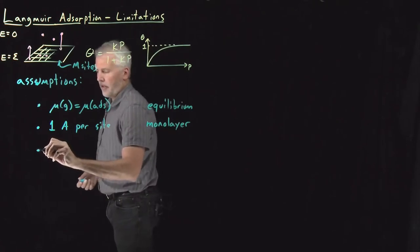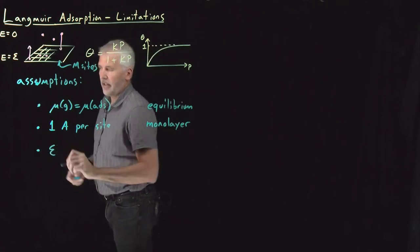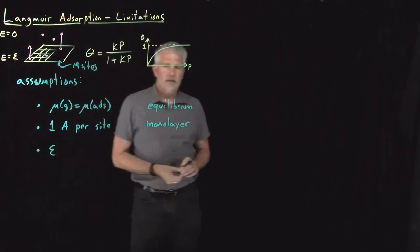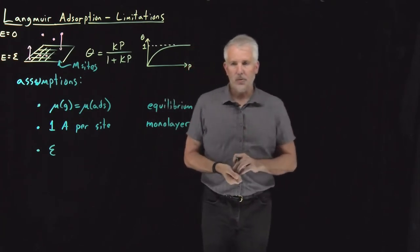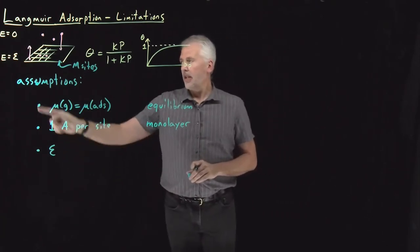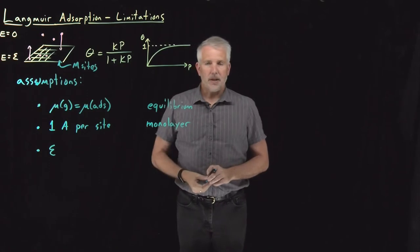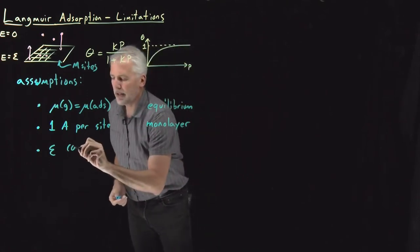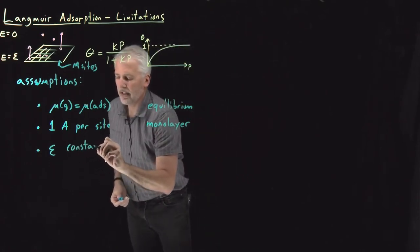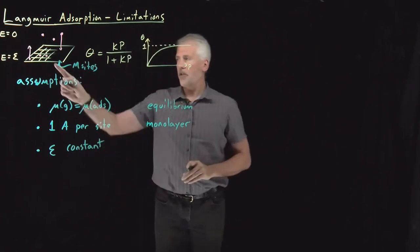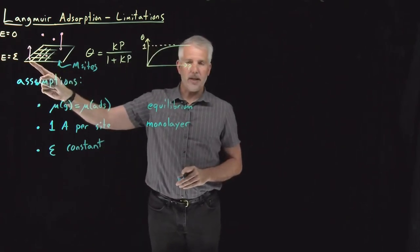So a third assumption that we made is this value of epsilon. Certainly molecules bind to the surface with some binding energy. That binding energy we can represent by some constant. But we've assumed that that binding energy is in fact a constant. That the binding energy right here is the same as the binding energy right here.